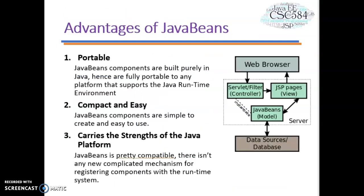Now let's look at the advantages of Java Bean. First, it is portable — Java Bean components are built purely in Java and hence are fully portable to any platform that supports the Java Runtime Environment. All platform-specific support for Java Beans is implemented by the JVM. Second, it is compact and easy — Java Bean components are simple to create and easy to use. A bean is lightweight and doesn't require a lot of inherited packages. Third, it carries the strength of the Java platform — Java Bean is pretty compatible and there isn't any new complicated mechanism for registering components with the runtime system.